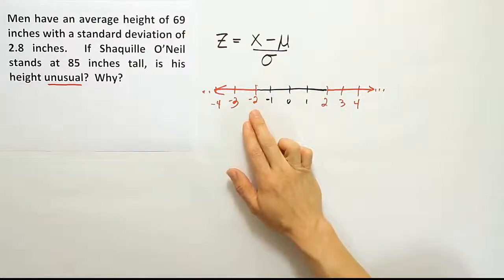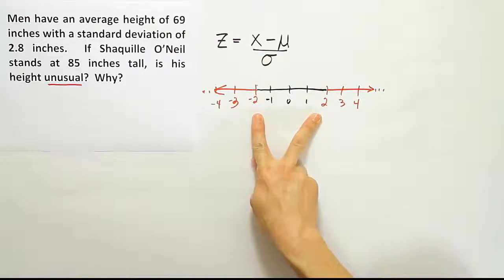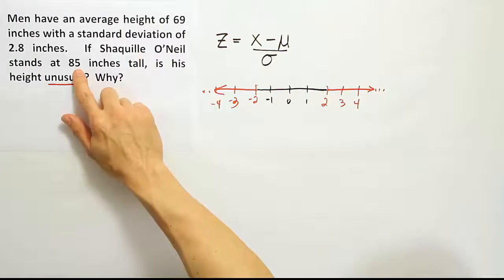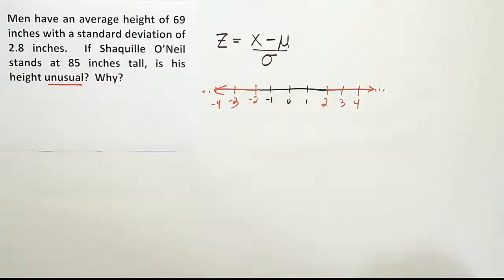If you happen to have a bell curve distribution, two standard deviations will capture 95% of the data. So essentially all we have to do in this problem is to convert Shaquille O'Neal's height into a z-score. Once we do that, we'll know if it's unusual or not. So let's do that then.